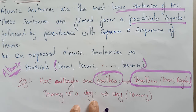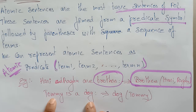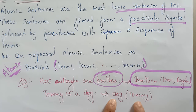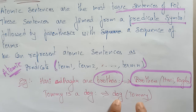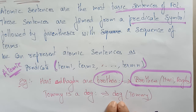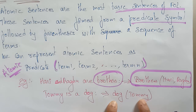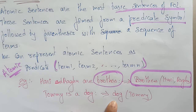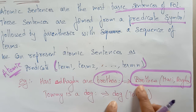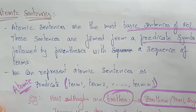Another example: 'Tommy is a dog.' Here there is only one term. 'Dog' is the predicate and 'Tommy' is the term — the name of the dog. The predicate 'dog' is a constant here, but the terms can change, meaning different dog names can be used as terms related to the predicate dog. So this is the atomic sentence.